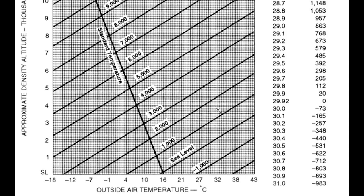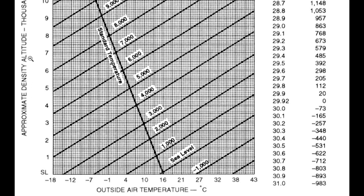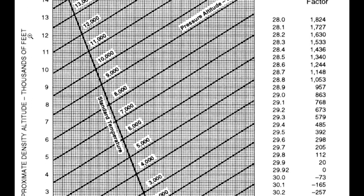Now we're going to take that and we're going to follow it straight across. And we come out with a density altitude of just above 3,500, maybe 3,600. And you can see this over here is the approximate density altitude in thousands of feet.